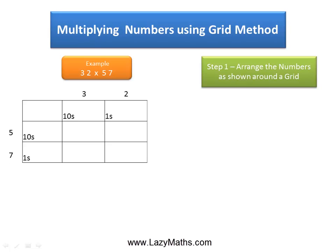We arrange them in this particular way in a grid. The next step is to multiply each number down and across the grid as shown. So we first multiply the 50 with the 30 and we get 1500. Next we multiply the 50 with the 2 and we get 100.